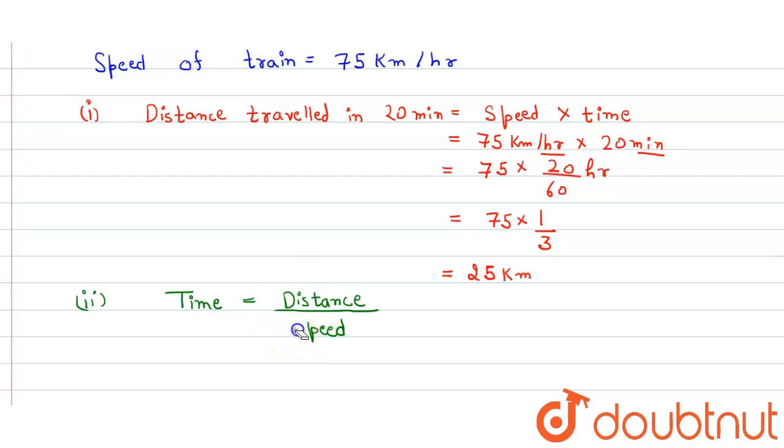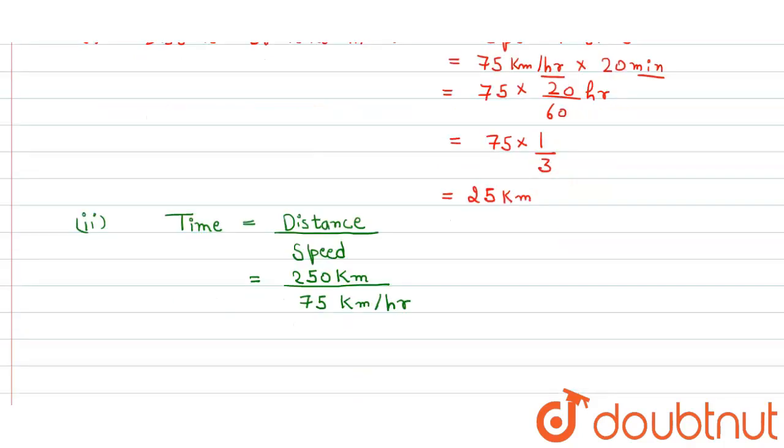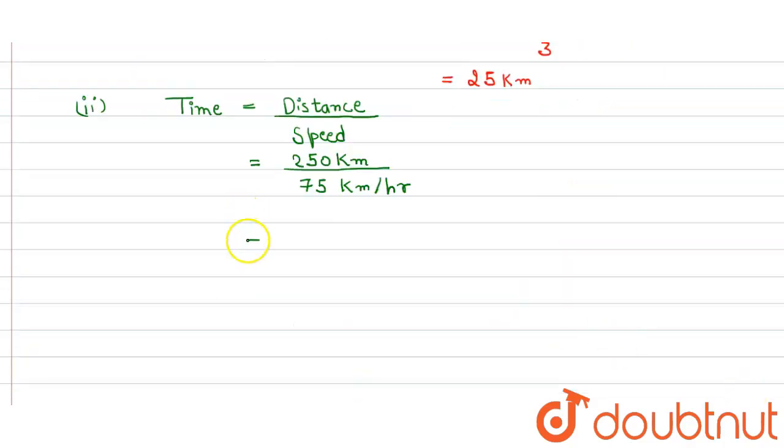Distance upon speed. So we just put the value, and the distance is 250 kilometer and the speed is 75 kilometer per hour. So here the unit is same, so we don't need to change it. So here we get 10 by 3 hour. We can convert it in minute